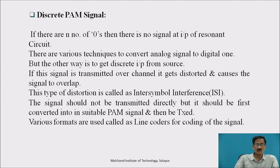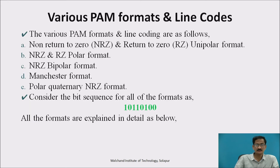If a signal is transmitted over a channel, it gets distorted and causes signals to overlap, called inter-symbol interference. Various PAM formats and line codes include: non-return-to-zero (NRZ), return-to-zero (RZ), NRZ polar format, NRZ bipolar, Manchester format, and polar quaternary return-to-zero.